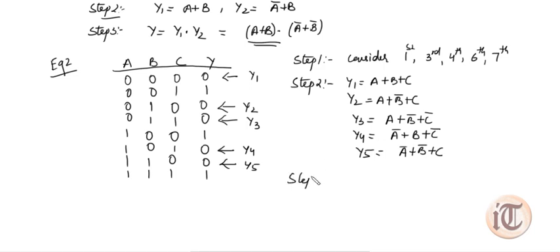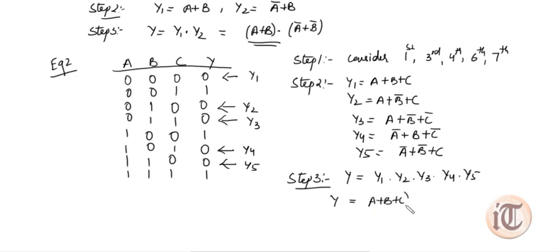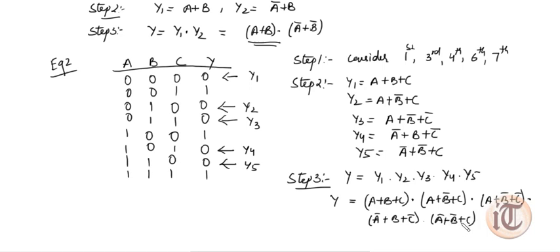In step three we take the product of all sum terms. So Y equals Y1·Y2·Y3·Y4·Y5, which gives the required POS expression: Y = (A+B+C)·(A+B-bar+C)·(A+B-bar+C-bar)·(A-bar+B+C-bar)·(A-bar+B-bar+C). We can also write these expressions in terms of max terms, which we will discuss in the next lecture. Keep watching — thank you.